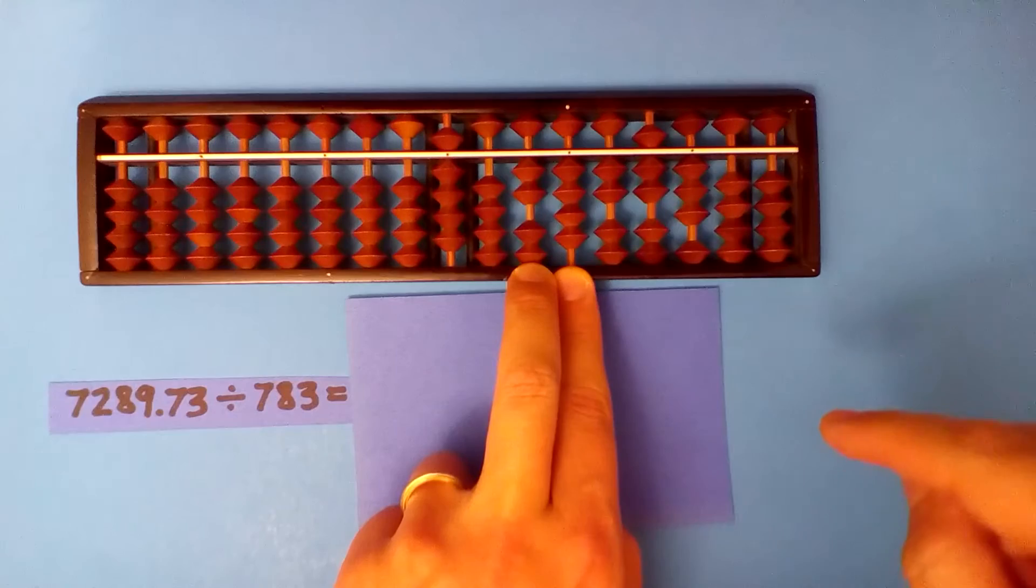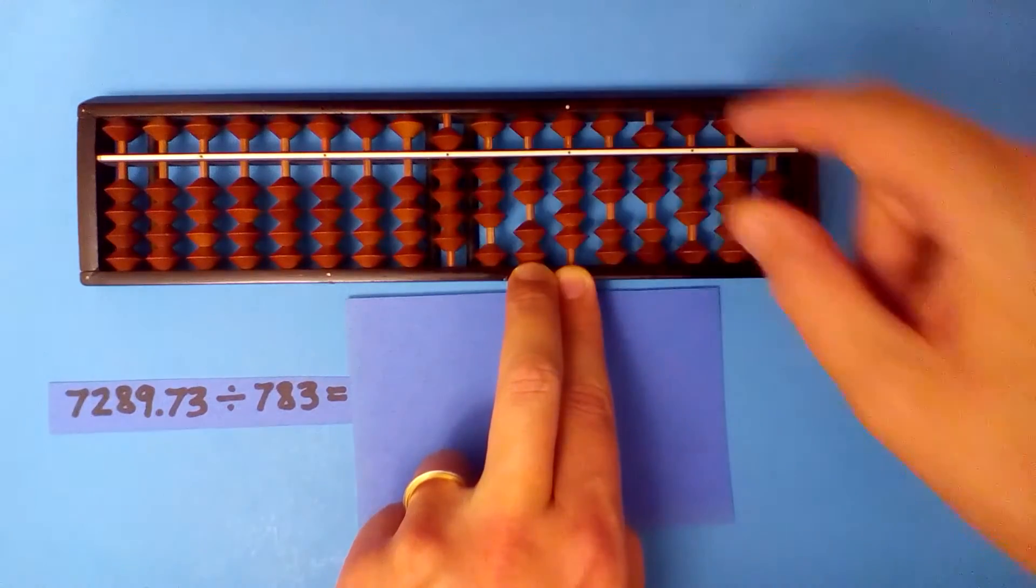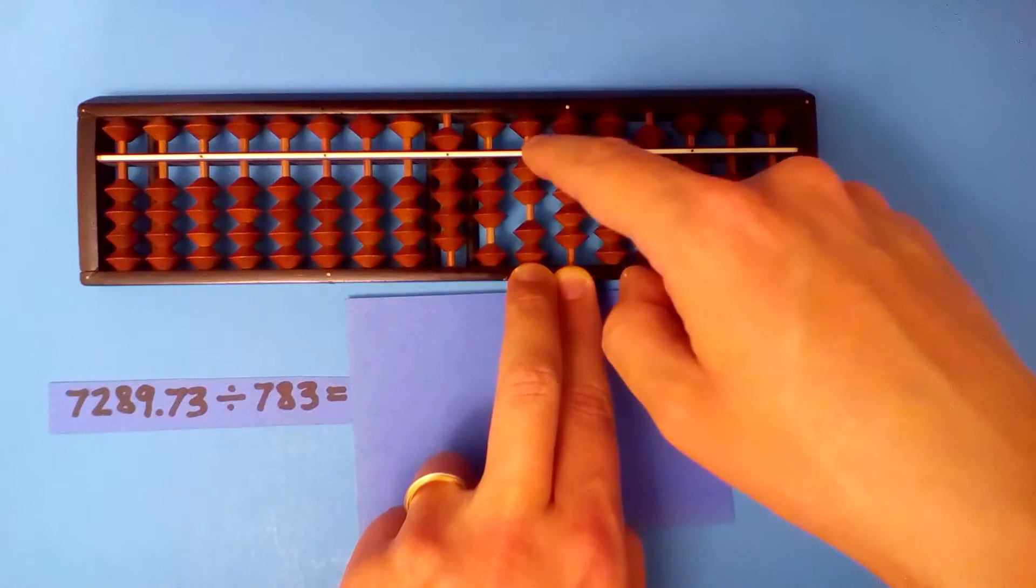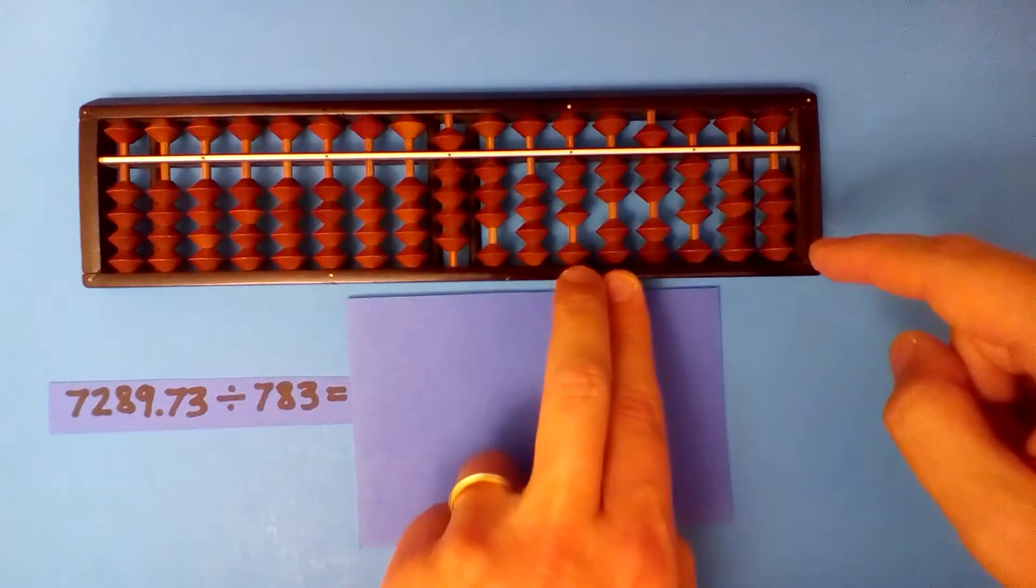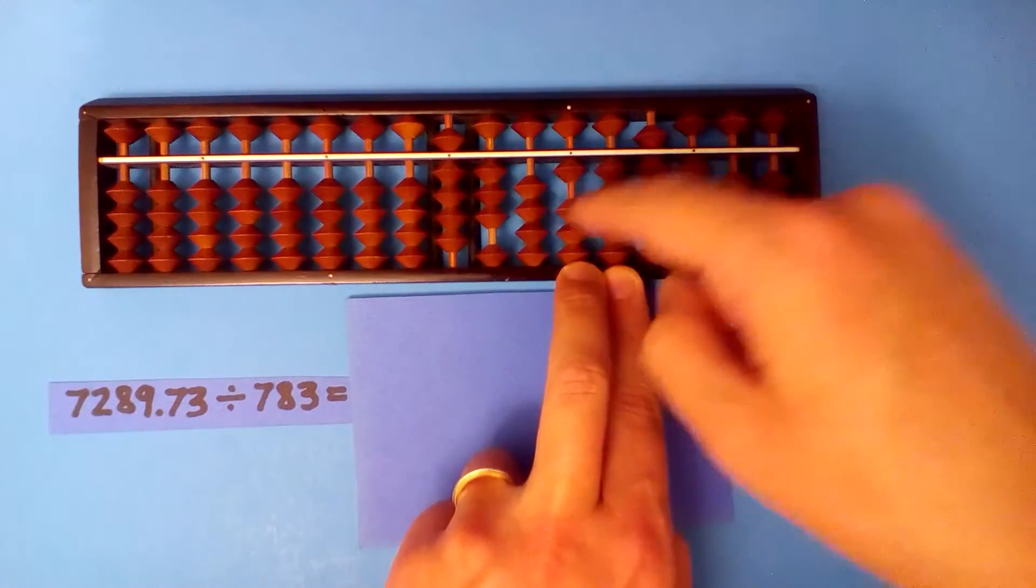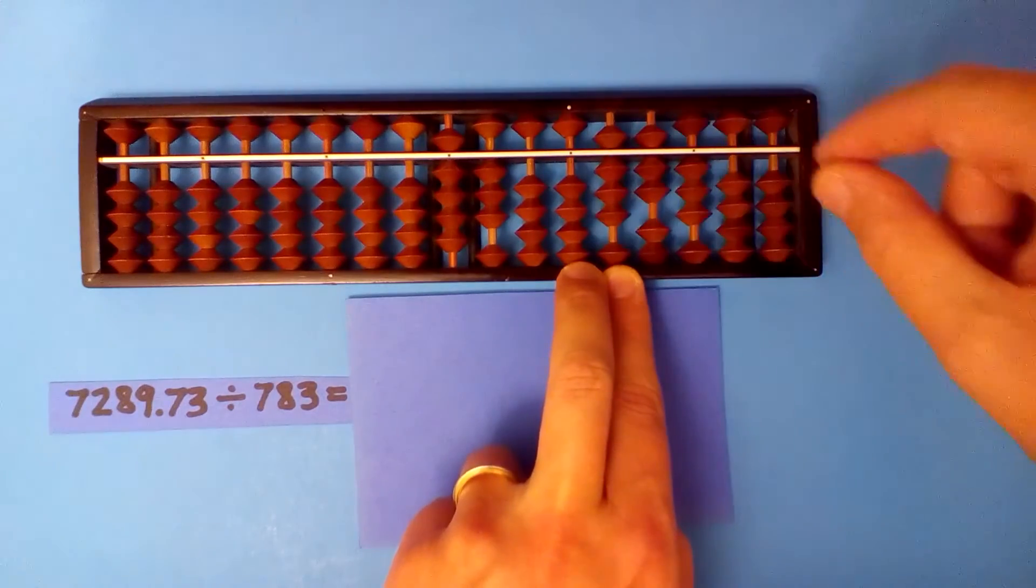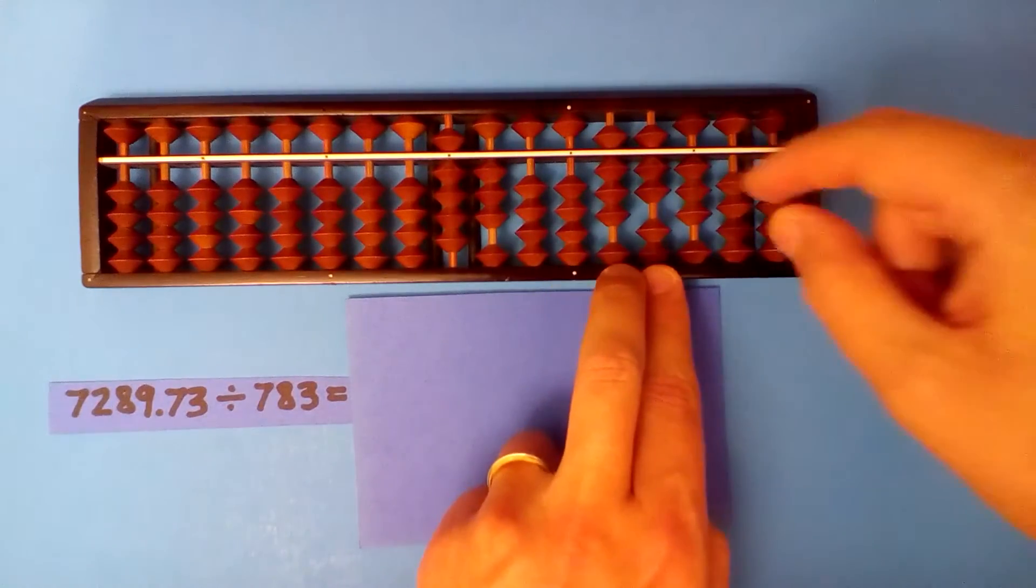Eight into twenty-four three times. Three times seven twenty-one, three times eight twenty-four, three times three nine.